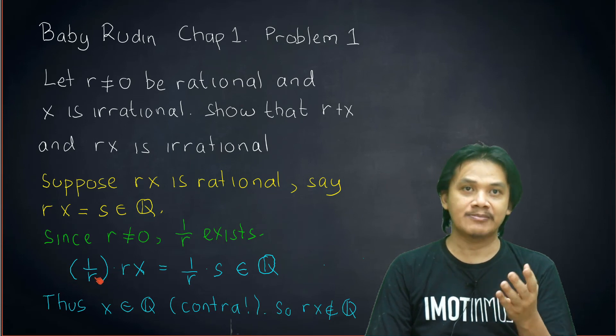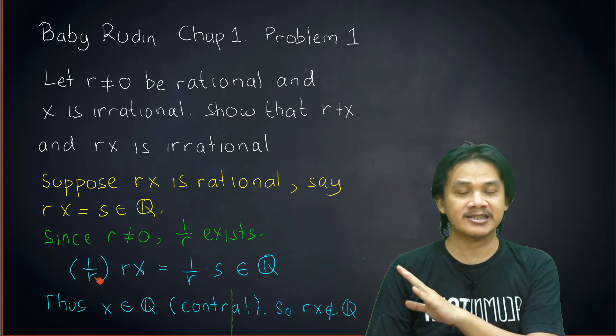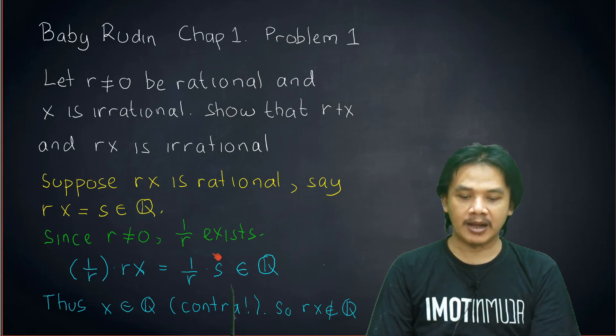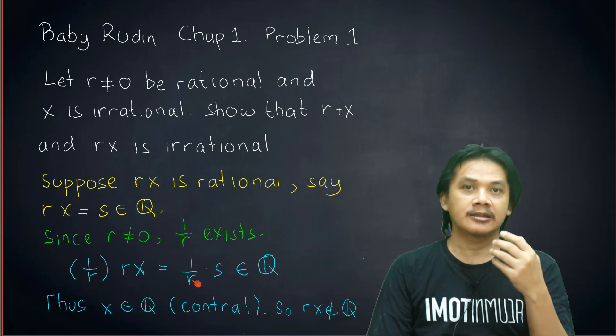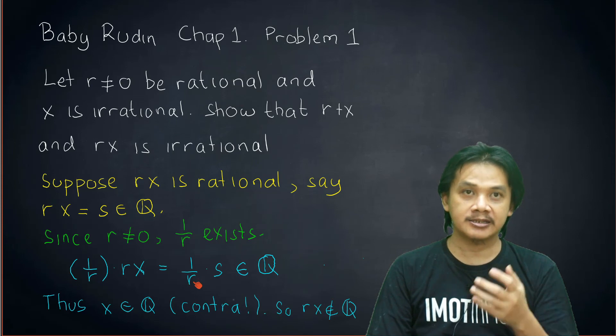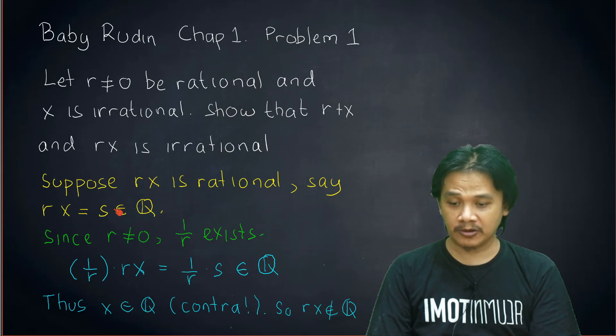But 1 times x is x. So the left-hand side is equal to x. Meanwhile, the right-hand side: since r is in ℚ, which is a field, then 1/r is in ℚ as well. And s is in ℚ because of this.